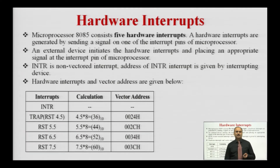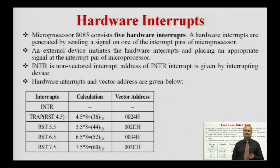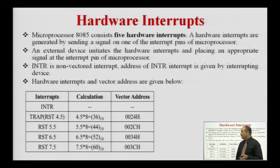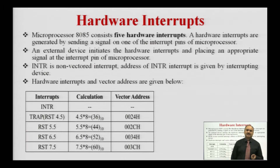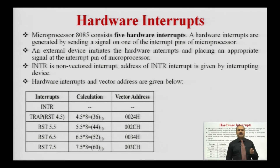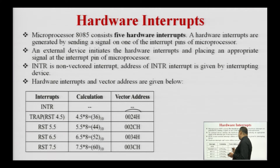Next are the hardware interrupts. In the 8085 microprocessor, we have 5 hardware interrupts: RST4.5, RST5.5, RST6.5, RST7.5, and INTR. Hardware interrupts are generally generated by sending a signal on one of the interrupt pins of the microprocessor. In the 8085 microprocessor, there is a dedicated pin for each hardware interrupt. These pins accept the interrupt request signal from the external device. The vector address for hardware interrupts is also calculated by multiplying the interrupt number by 8. For RST4.5, the vector address is 0024H; for RST7.5, the vector address is 003CH.